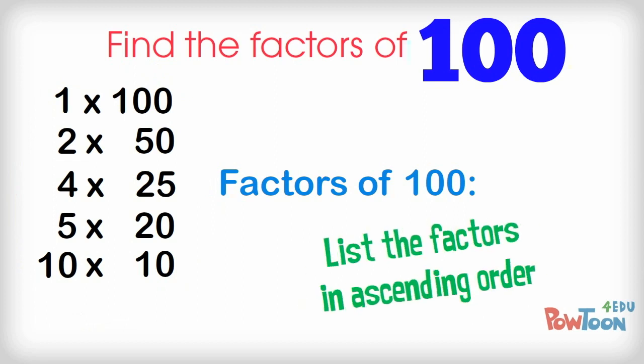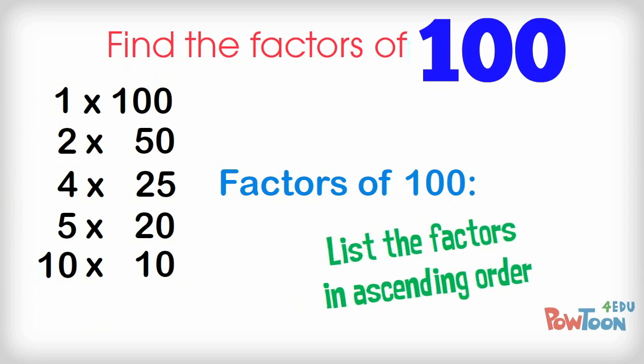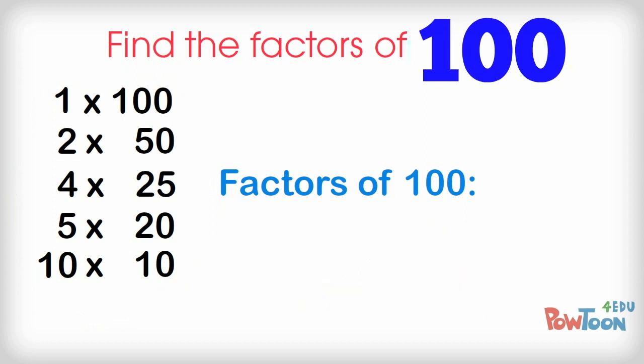As you know, we always list our factors in ascending order. So we simply read down the first values here and list them all off, and then we read up these second values and list them off.